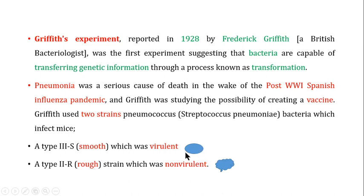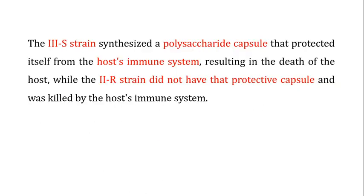The rough strain is non-virulent, meaning if you are infected with this particular strain of Streptococcus pneumoniae it is not going to kill you. The smooth strain was called the smooth strain because if you looked at it on a media plate, its surface is really smooth. The rough strain's surface on the media was very rough, and therefore they were called the smooth and the rough strain.